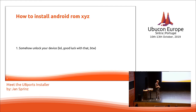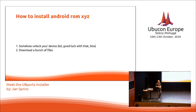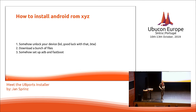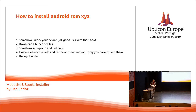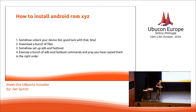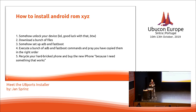So you have to unlock it somehow. Then you download a bunch of files. Then you set up ADB and Fastboot — hopefully configured by your distribution, but if you're on Windows it's different, if you're on Mac it's completely different. Then you find a guide on XDA Developers on how to install the operating system, copy over the ADB and Fastboot commands, and hope you did everything right. And then you recycle your bricked device and buy an iPhone.